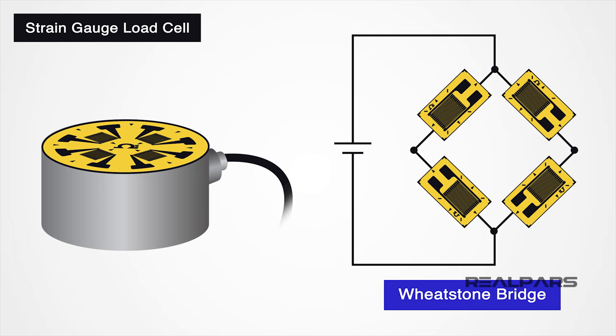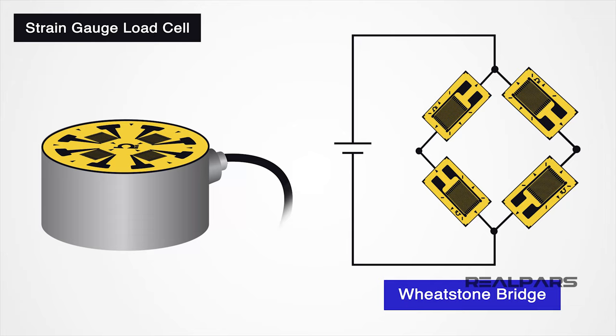The whetstone bridge circuit provides incredibly accurate measurements. The strain gauges that are in the whetstone bridge are bonded onto a beam, which deforms when weight is applied.